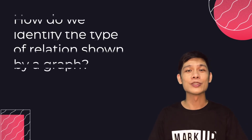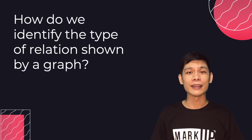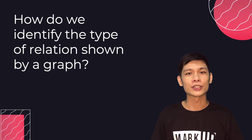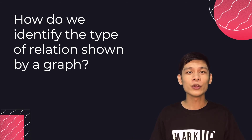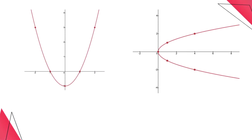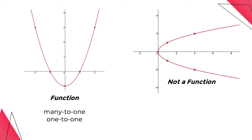We already know that we have to use the vertical line test to identify if a given graph represents a function. But in general, how do we identify the type of relation shown by a graph? Using the same graphs from the previous example — the graph on the left is a function, so it represents either a many-to-one or a one-to-one relationship. However, the graph on the right is not a function, so it can either be many-to-many or one-to-many.